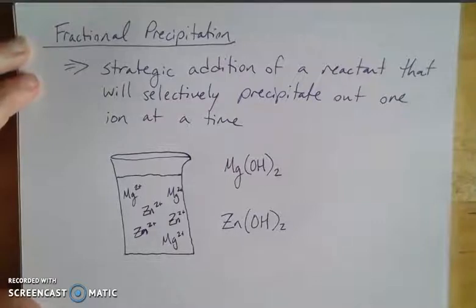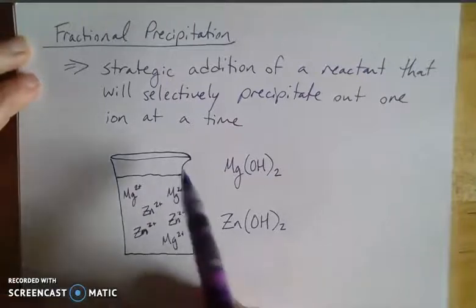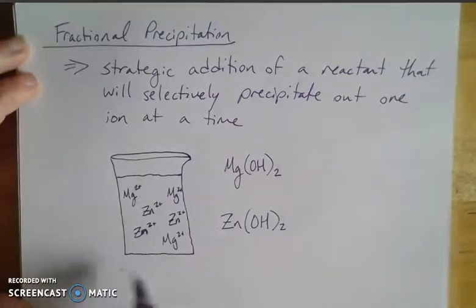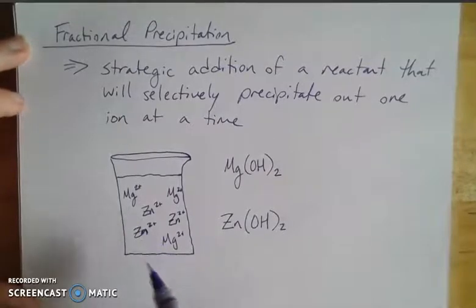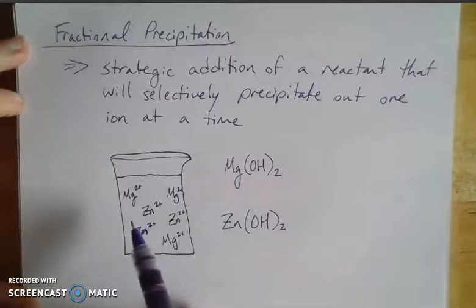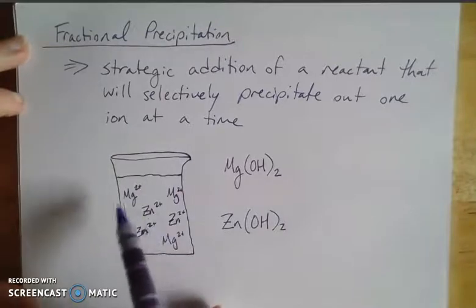This technique, fractional precipitation, is the strategic addition of something to a system. So let's say I have some ions in solution like this. I have magnesium and zinc here, and if I strategically add something to it that can react with both,